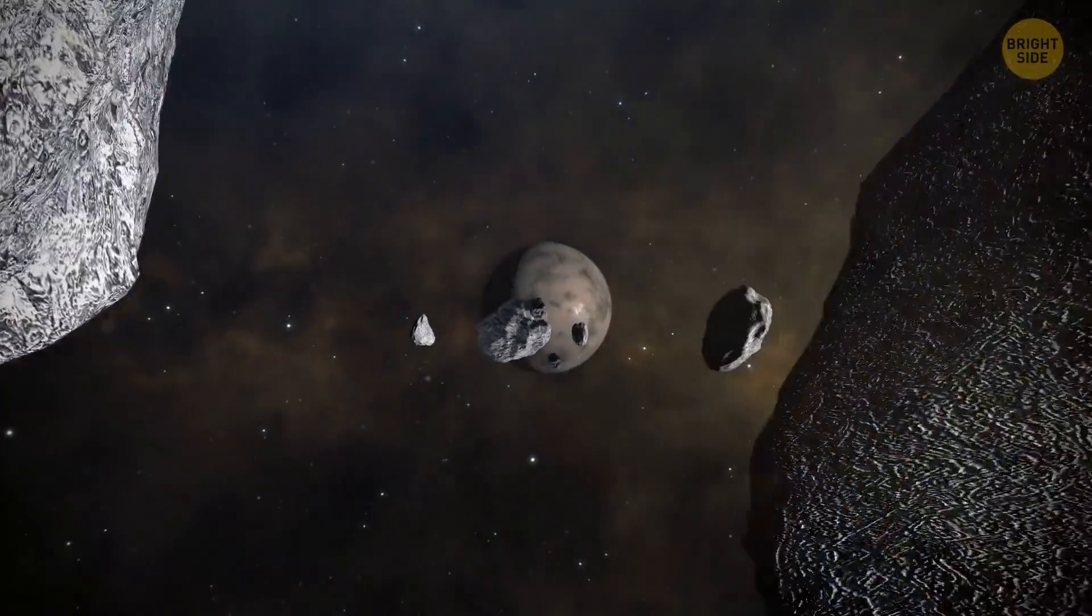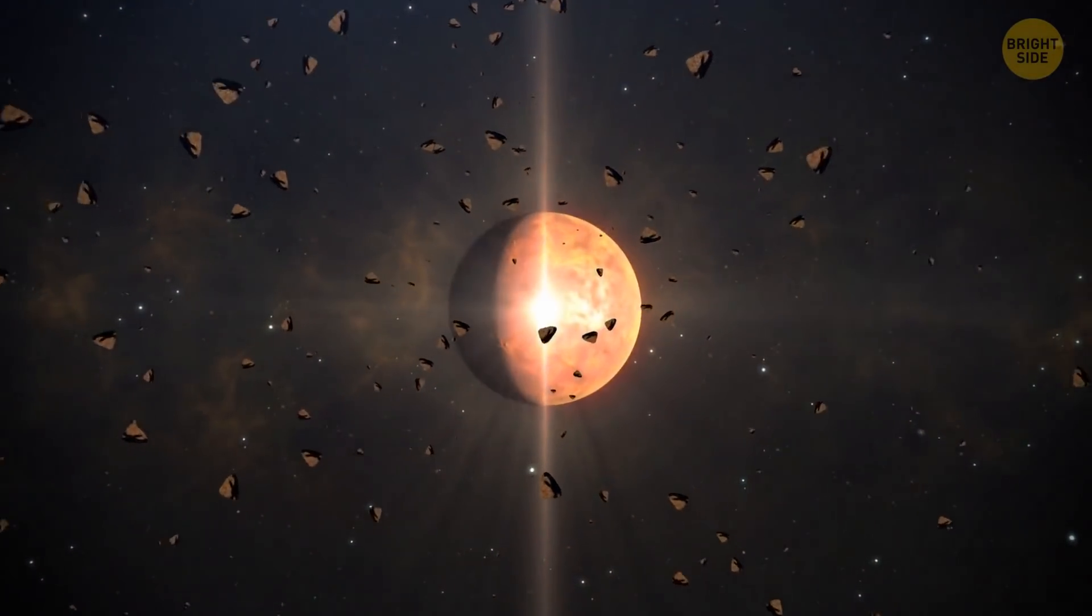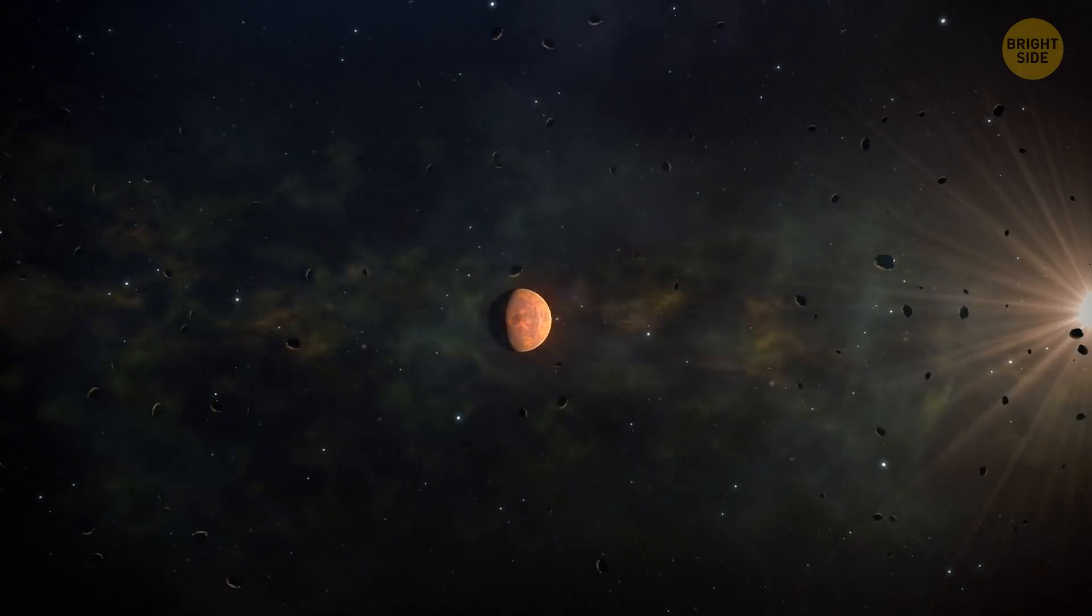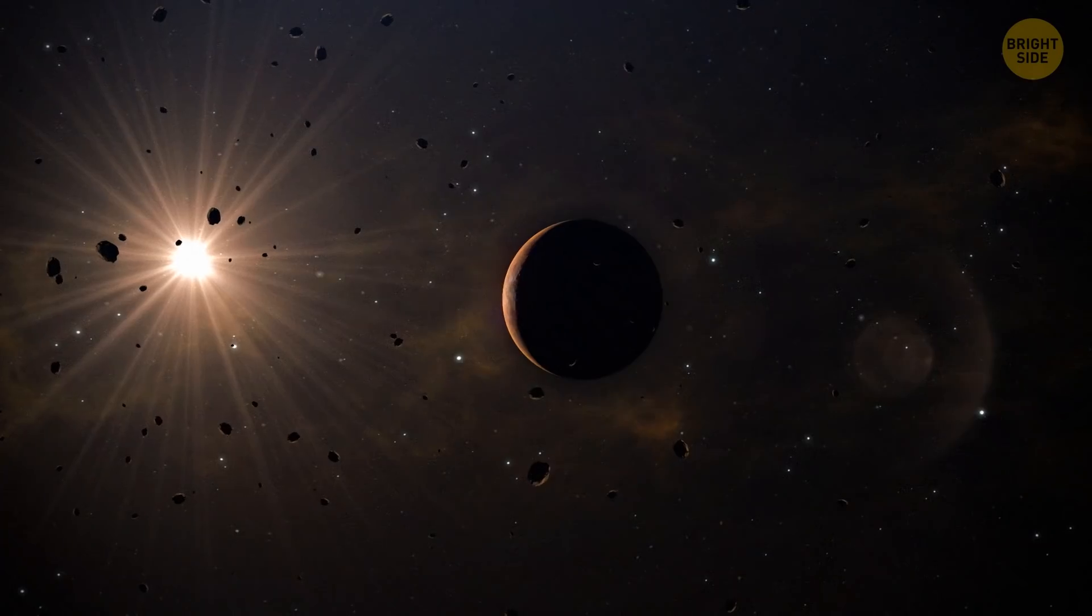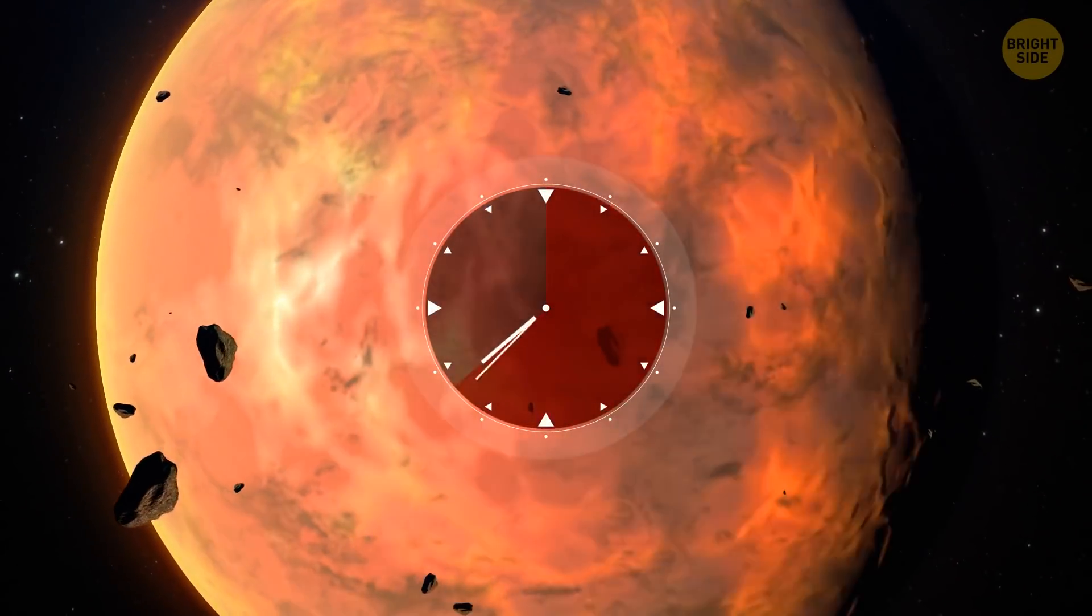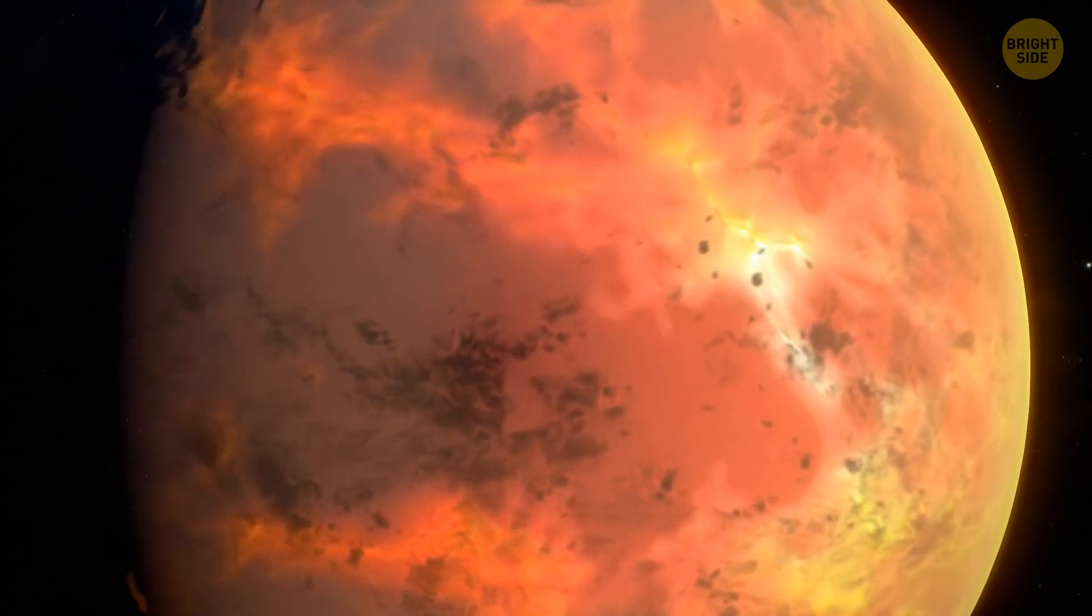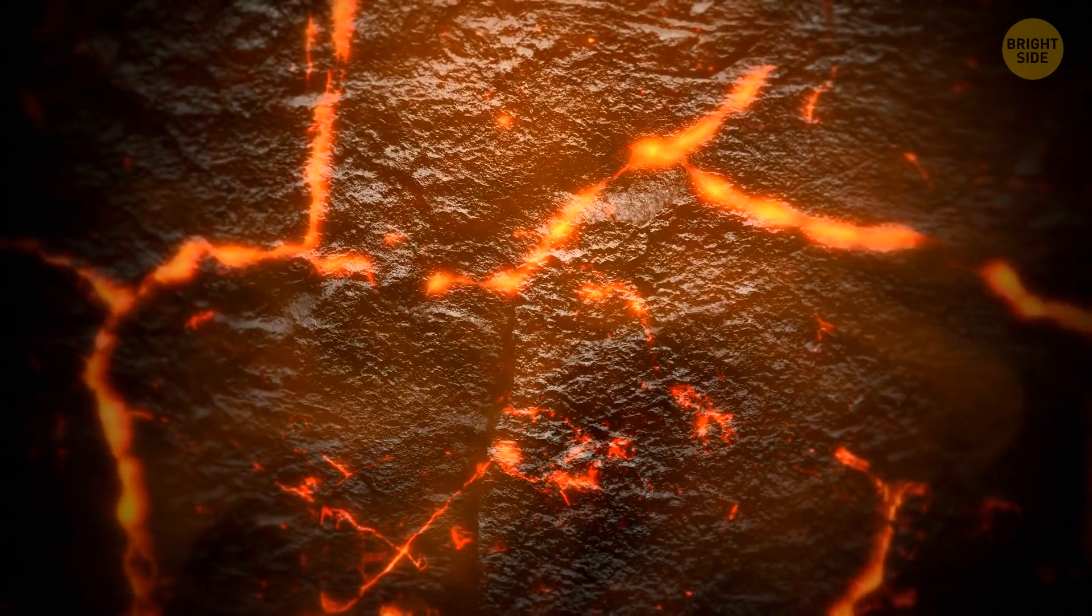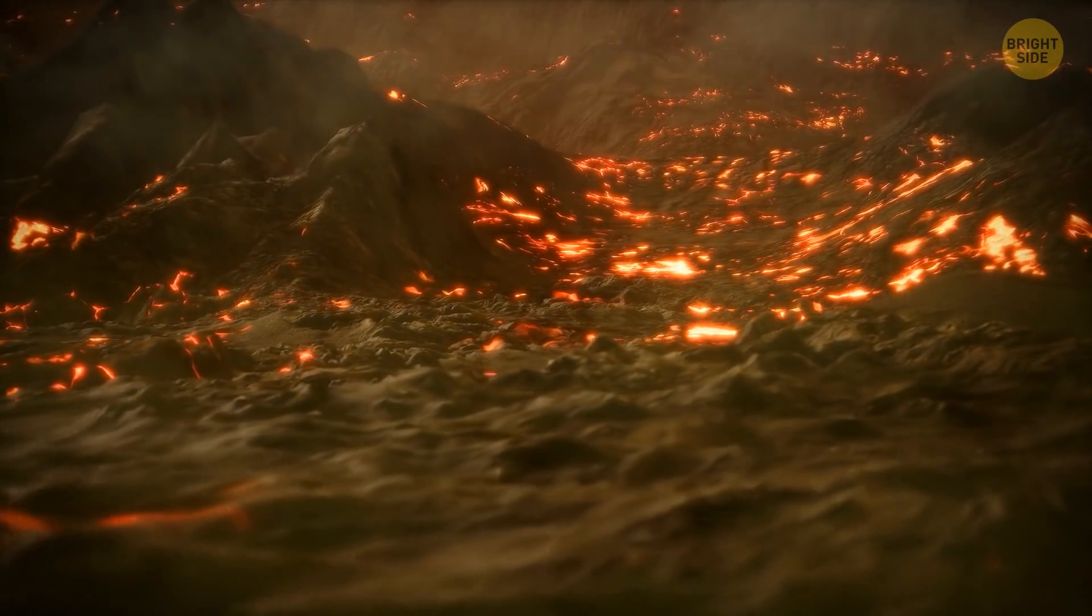Maybe this exoplanet participated in a huge space crash, too. That's what probably took away the planet's mantle and left mostly its iron core. Or maybe this is just a remnant of a gaseous planet that used to be the size of Neptune. The atmosphere of the planet could be blown away by, let's say, a huge amount of radiation coming from the star. This planet is only 31 light-years away from us, and the day there is less than 8 Earth hours long. The planet is only a little bit bigger than Mars. People aren't likely to ever settle in that place because of its extreme temperatures that go up to 2,700 degrees Fahrenheit.